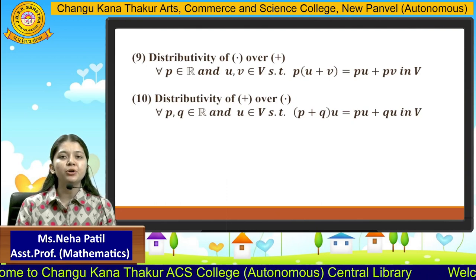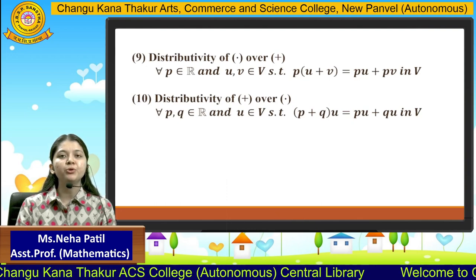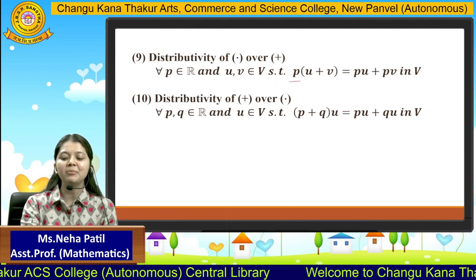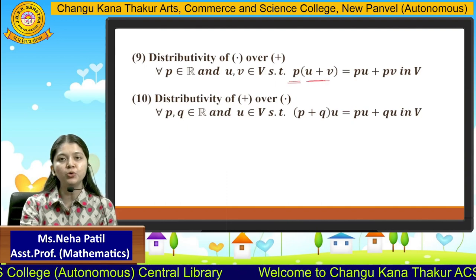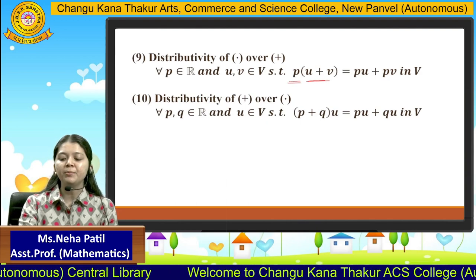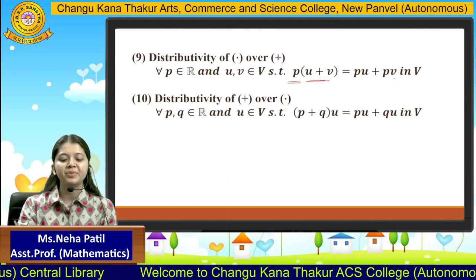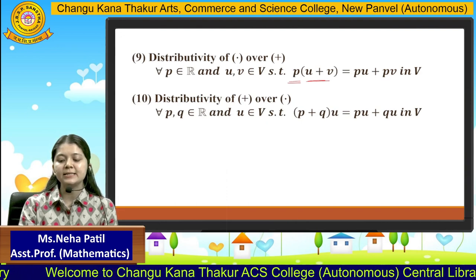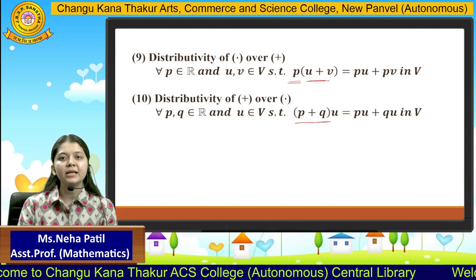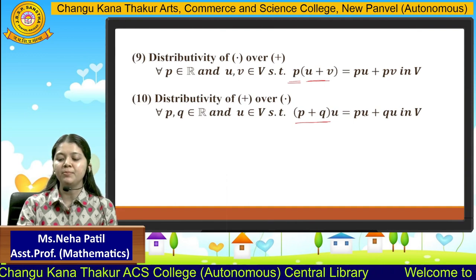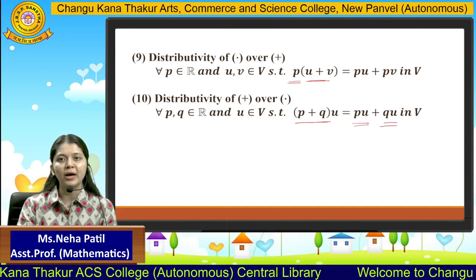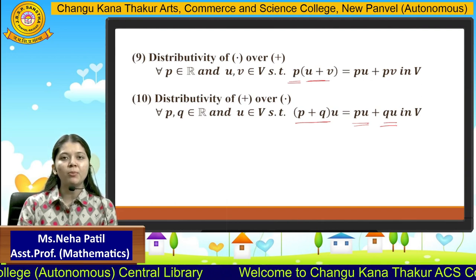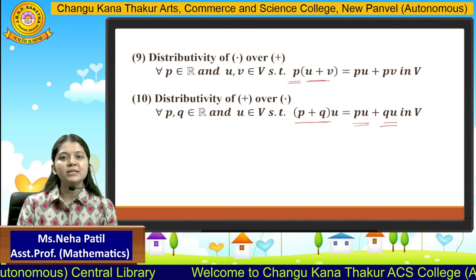The last two properties are based on distributivity. The ninth is distributivity of scalar multiplication over vector addition: multiplying a scalar t by the sum of two vectors gives tu + tv. The tenth is distributivity of scalar multiplication over scalar addition: adding two scalars t and q then multiplying by u gives tu + qu. The result must also belong to V. Any set satisfying all ten properties will be called a vector space.